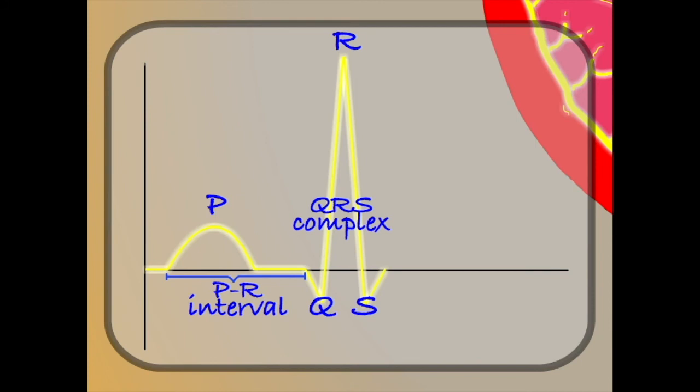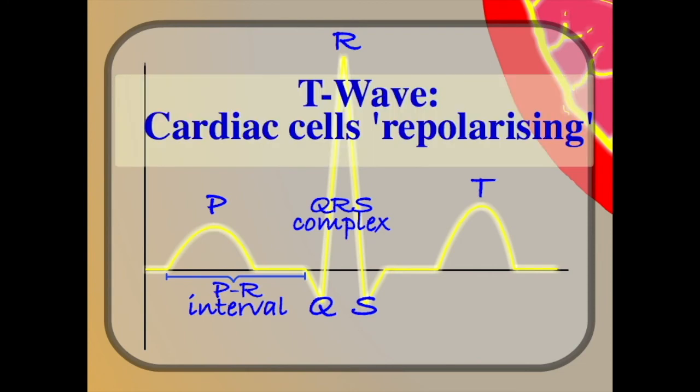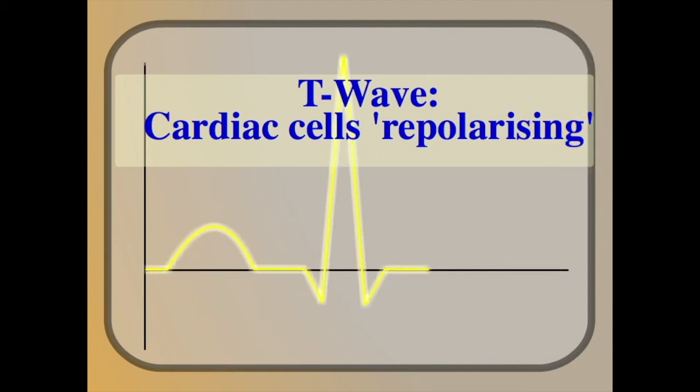There is one final bump at the end of the ECG complex, known as the T wave. This can be thought of as the cardiac cells that have been involved in transmitting the electrical impulse resetting themselves, ready to transmit again. The more technical name for this is repolarization. And that's our ECG complex.